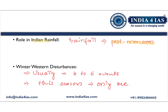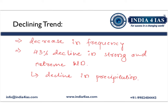During normal years, there are usually 4 to 6 events of western disturbance per year. However, this season there has been only one event, indicating a significant decline. Western disturbance is showing a decrease in both intensity and frequency in recent years, with a 43% decline in strong and extreme western disturbance events, causing reduced precipitation in northern India during winter.